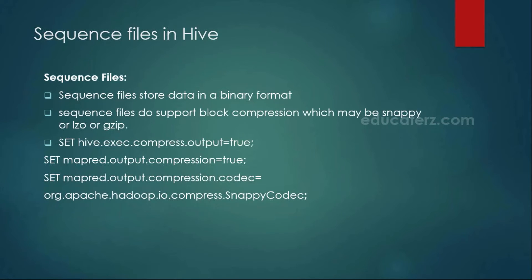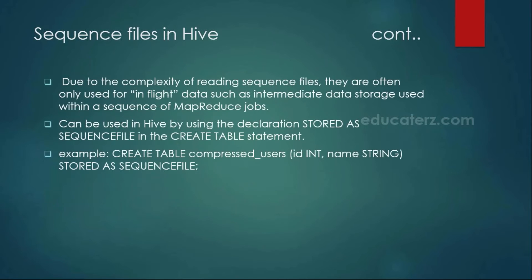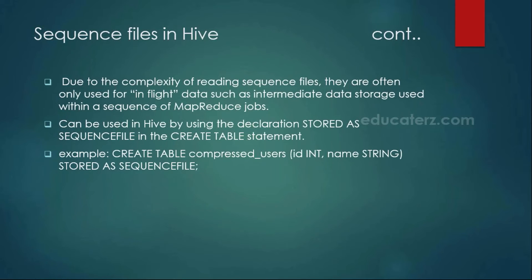Sequential files are mainly for binary data, and reading binaries is highly complex. That is the reason why especially if you want to store intermediate MapReduce job results, we use the sequential file format. How to create this: while creating a table, you can specify CREATE TABLE table_name and instead of stored as text file, you store as sequence file. So it automatically uses the binary format.